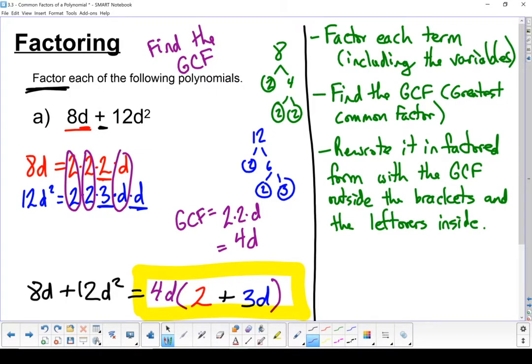A little side note, if all of the factors of a term happen to be in the greatest common factor, you don't write nothing down inside the brackets. You still have to put a 1 for that part.